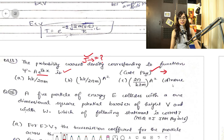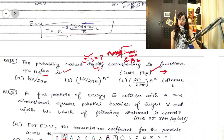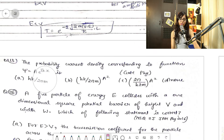In short, the probability current density means: a particle is there, and the probability of striking the surface — to cross the path — of unit area per unit time. What will be the probability of a microscopic particle to cross a surface of unit area per unit time? That is the definition for people who are new.